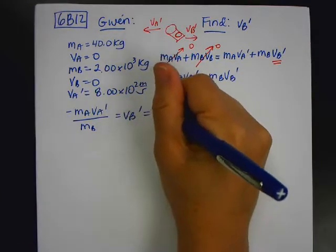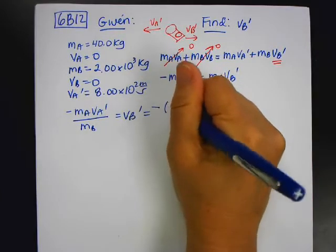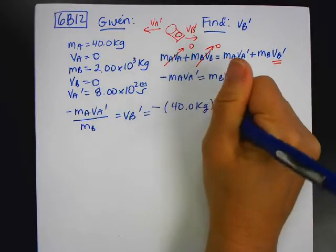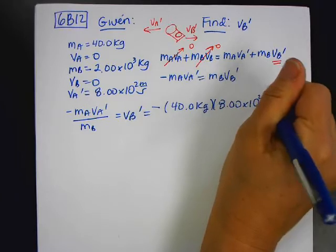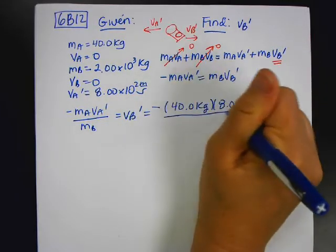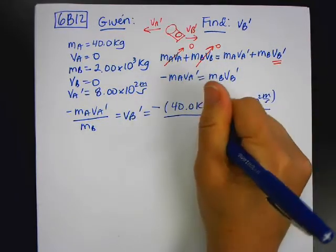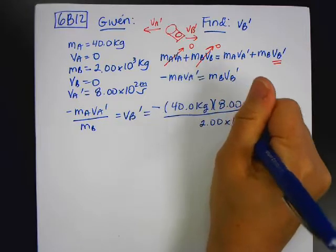So negative 40 kilograms times 8 times 10^2 meters per second divided by 2.00 times 10^3 kilograms.